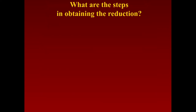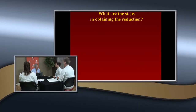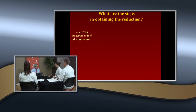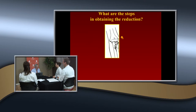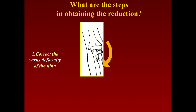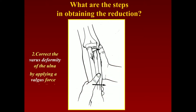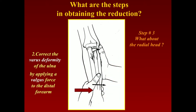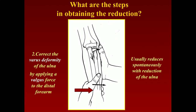You're going to reduce it and reverse the deformities. What's the first stage? Reduce the ulna first. You extend the elbow to lock the olecranon, then apply a valgus force — that'll correct the varus deformity of the ulna. Usually, when you do that, the radial head spontaneously reduces. If not, you may have to put a little pressure on it.